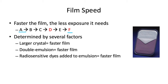Of the ones listed, D and F are currently the most popularly used film speeds. Film speed is determined by several factors: crystal size — the larger the crystal, the faster the film; how many emulsion layers there are — a double emulsion means the film will be faster; and adding radiosensitive dyes, which will also increase the speed of the film.